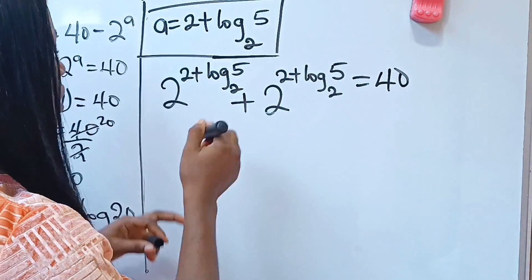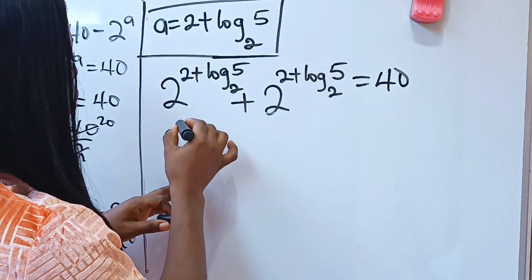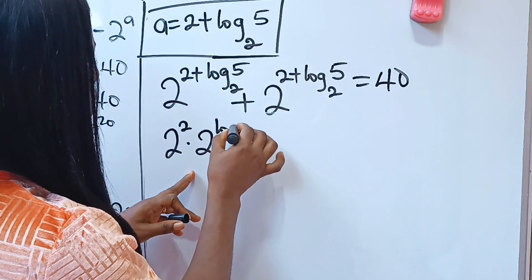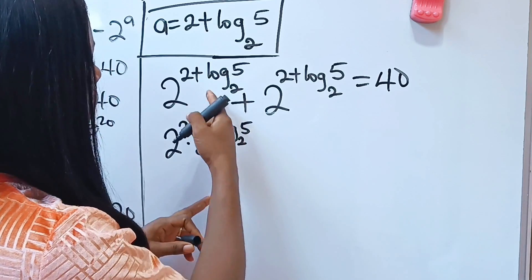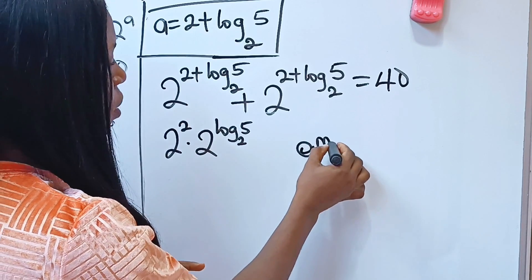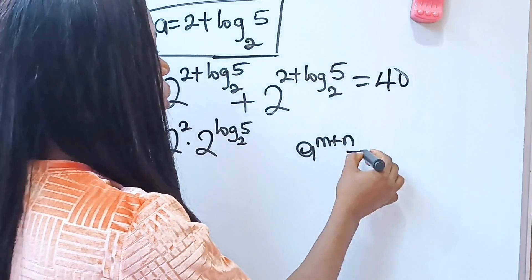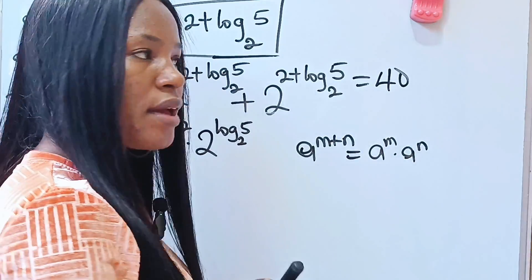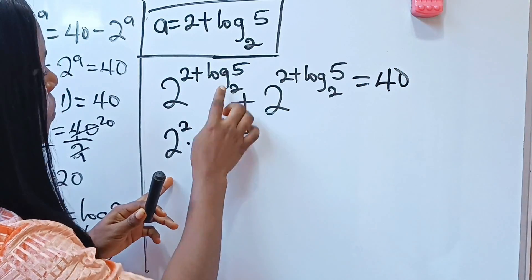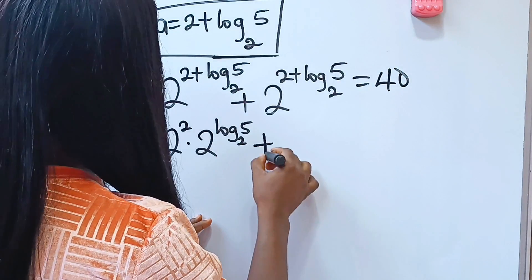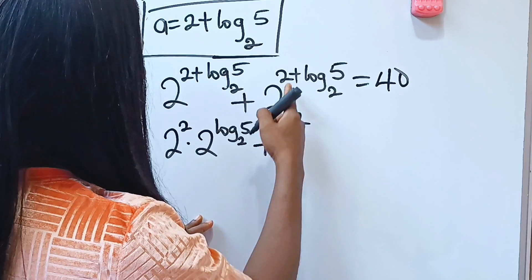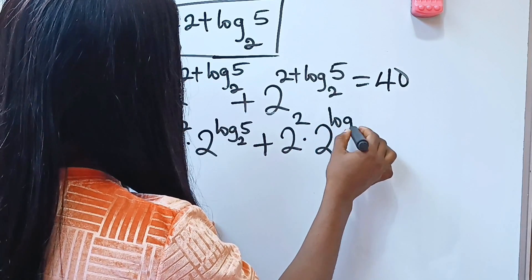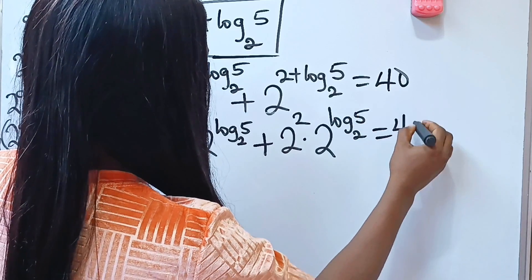Now we have 2 to the power of 2 multiplied by 2 to the power of log base 2 of 5. Why is that? Because when you have a to the power of (m + n), it is equal to a to the power of m multiplied by a to the power of n. So that is why I had to separate this. And similarly, we have the same thing for the second term: 2 to the power of 2 multiplied by 2 to the power of log base 2 of 5, equal to 40.